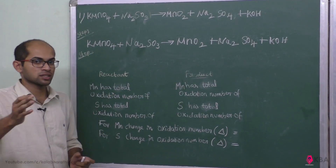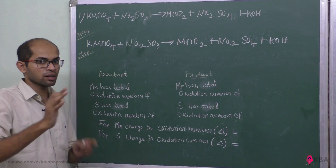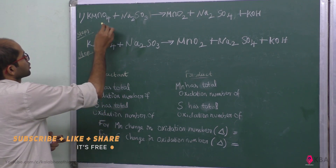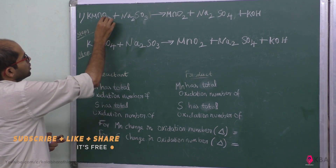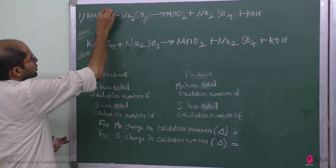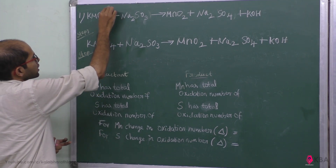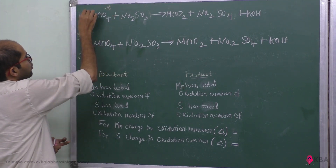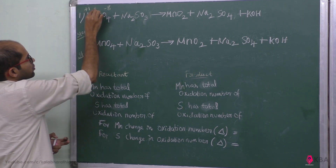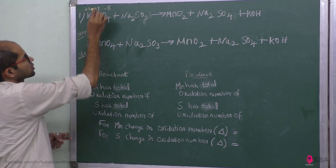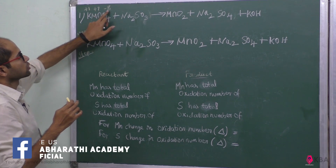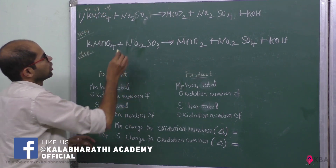First step: assign oxidation numbers to all the atoms in the reaction. For KMnO4 — oxygen is minus 2, so 4 oxygens give minus 8. Potassium is plus 1. So manganese has to be plus 7 for the compound to be neutral: plus 1 plus 7 minus 8 equals zero, neutral.